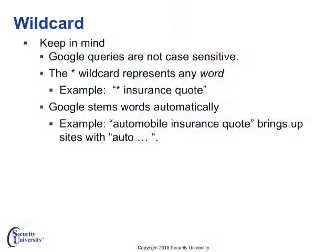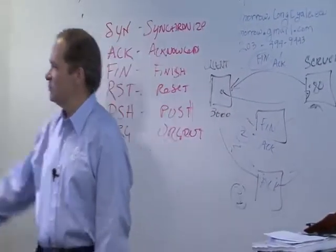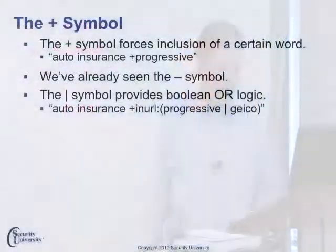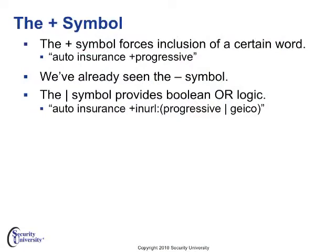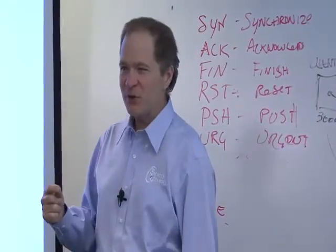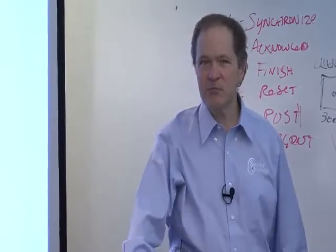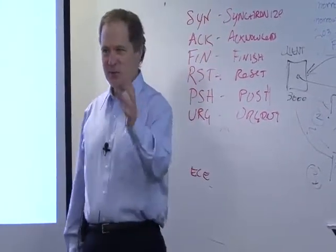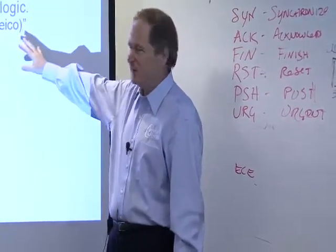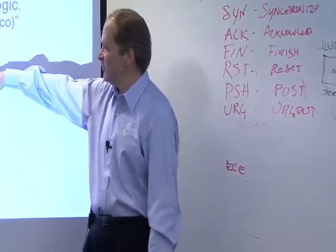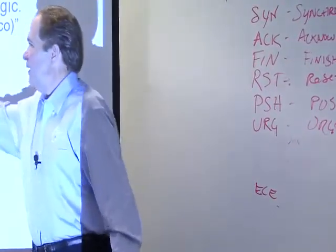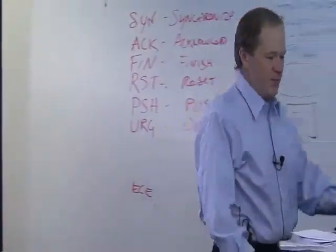We can also use wildcards in Google. Note that Google queries are not case-sensitive. Using the asterisk as a wildcard, I can say anything that contains a word and 'insurance quote' — for example, 'automobile insurance quote.' The plus symbol means a word has to appear on that page. If I put a minus in there, it means I don't want to see pages where that word shows up — don't show me anything that contains this. You can also use the OR symbol, so I can look for pages that contain 'auto and insurance' and whose URLs have either Progressive or Geico.